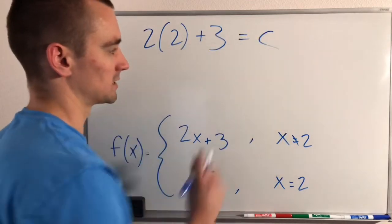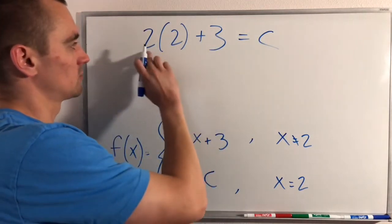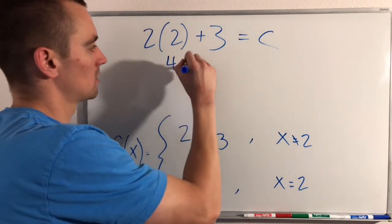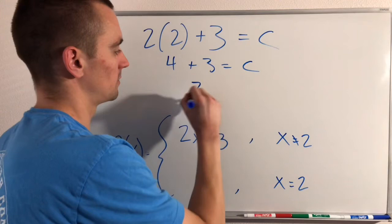And whatever this is, we need to make c be equivalent to that. So simplifying this, we'll just get 2 times 2 is 4, which 4 plus 3 would be 7.